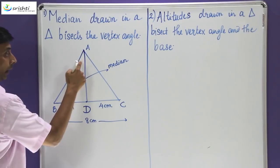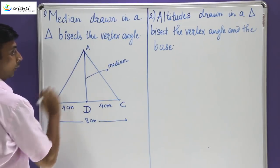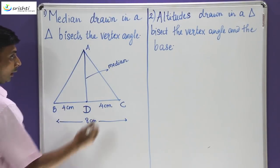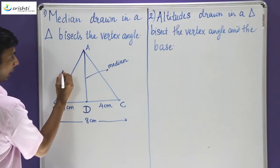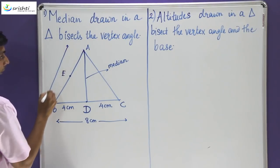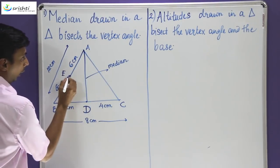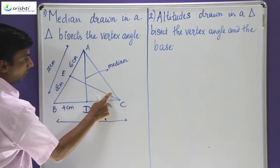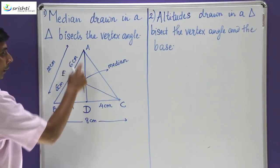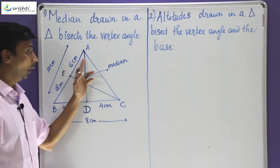Therefore the median is only bisecting the base into two equal parts — it has nothing to do with the angles. These two angles might be equal if it was an equilateral triangle or an isosceles triangle, but in all other triangles these two angles would be different. Therefore the median drawn does not bisect the vertex angle. Suppose I take the midpoint of AB which is say E, then E divides AB into two equal parts. If the length of AB was 12 centimeters then it is split as 6 and 6. When I join E with C, it does not mean that angle C is getting divided into two equal parts. The summary is: median divides the base into two equal parts but not the vertex angle.